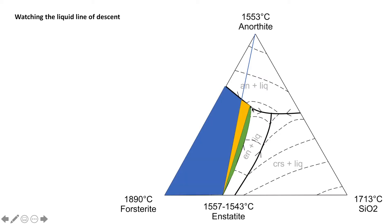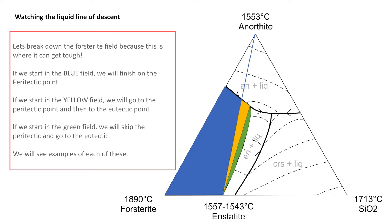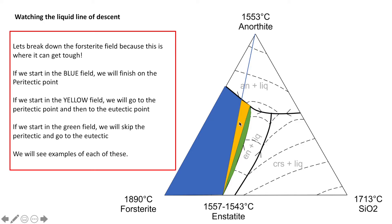I've filled in those fields in the forsterite field. If we start somewhere in this forsterite field, it's going to control where our system ends up. If our system begins in the blue field, we're going to finish on the peritectic point because we're plotting to the left of this blue line. If we start in the yellow field, we're going to hit the peritectic point but then continue and finish at the ternary eutectic point, because it plots to the right of this line but to the left of this other line. If we start in the green field, we're going to skip the peritectic point completely and go straight to the ternary eutectic.